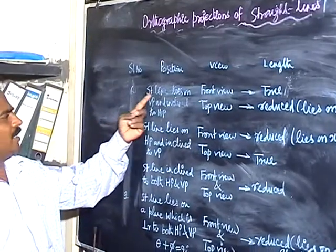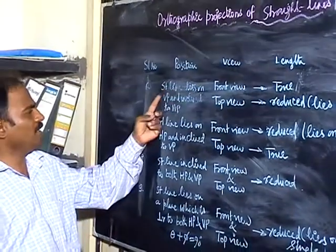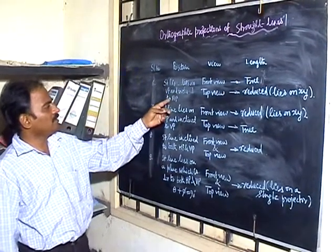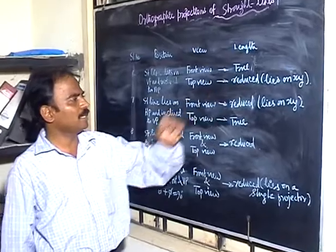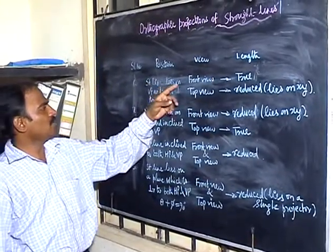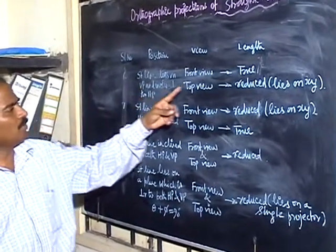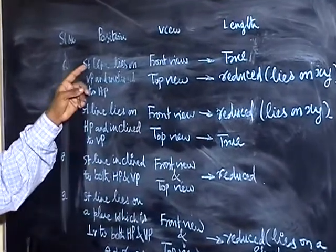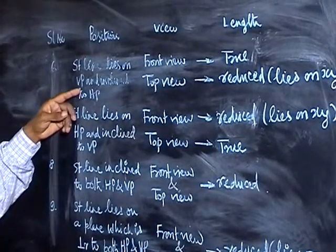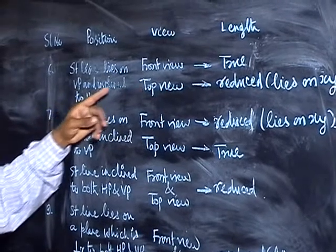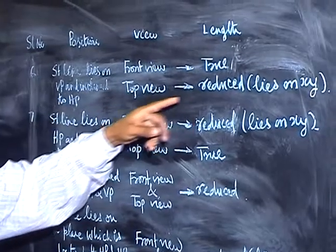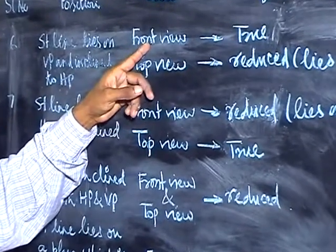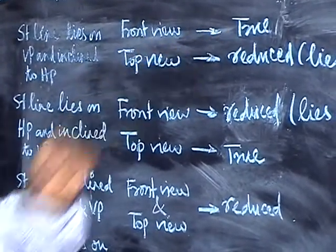Sixth case: the straight line lies on VP and is inclined to HP. Since it is inclined to HP, the top view will be of reduced length, and since the line lies on VP, the top view will be on the XY line. Since the straight line lies on HP, the front view will be of true length.